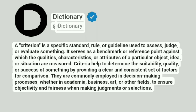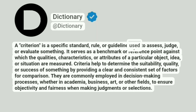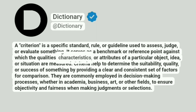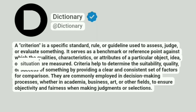Dictionary at Dictionary. A criterion is a specific standard, rule, or guideline used to assess, judge, or evaluate something. It serves as a benchmark or reference point against which the qualities, characteristics, or attributes of a particular object, idea, or situation are measured.